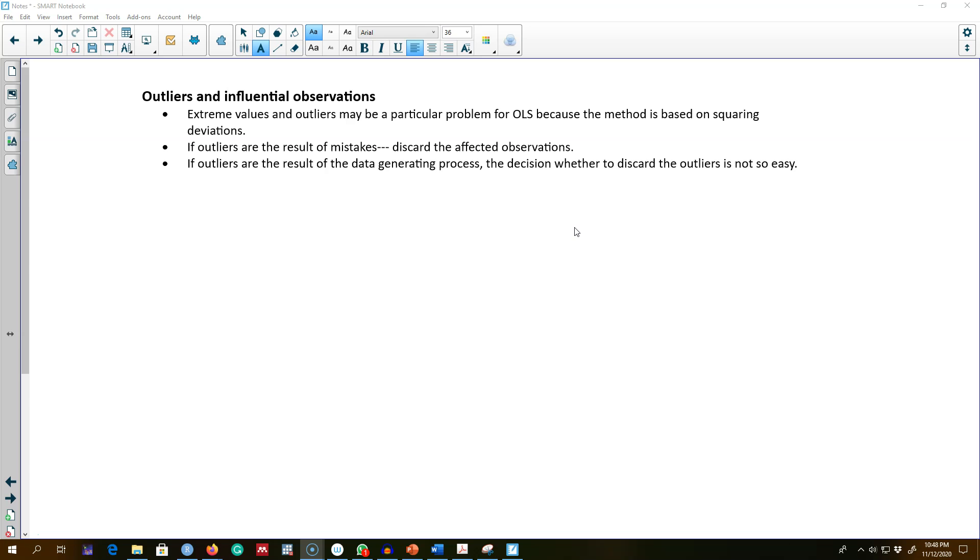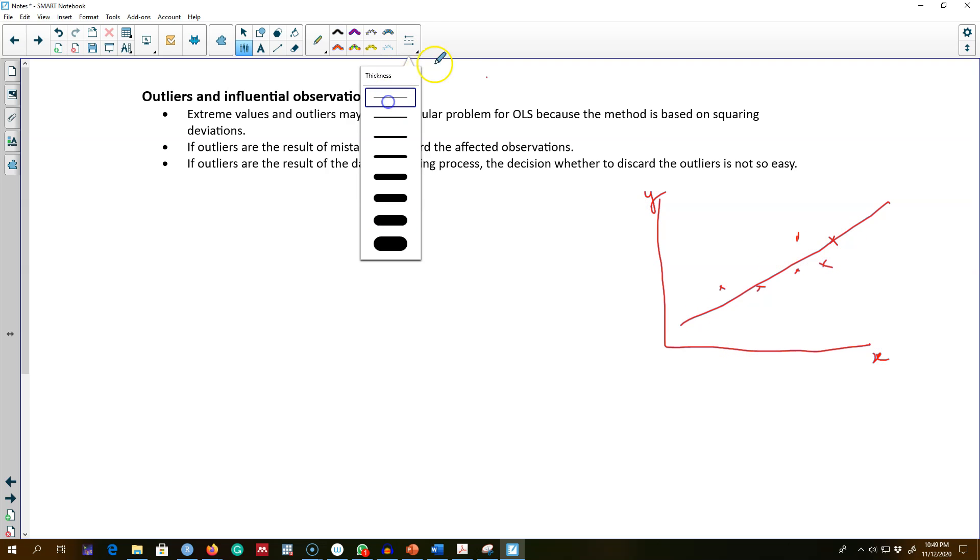When we have this problem, if we drop influential observations from the analyses, the OLS estimators change rather dramatically. For example, we may be estimating the relationship between two variables x and y, which could be represented using this regression line.